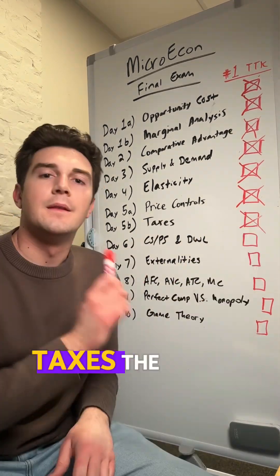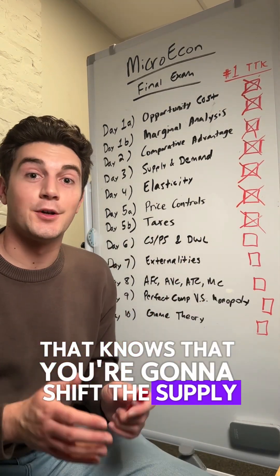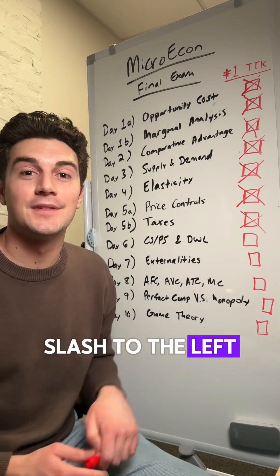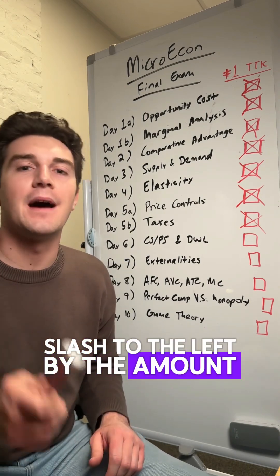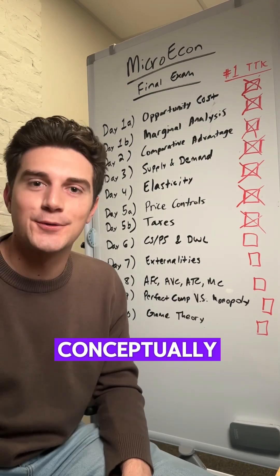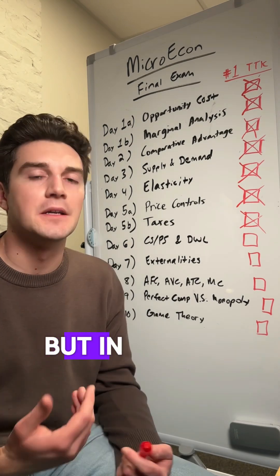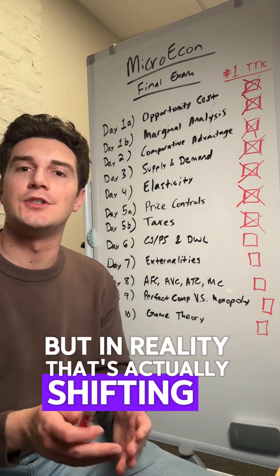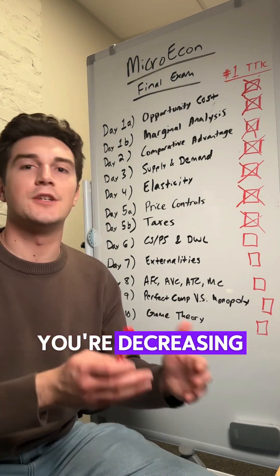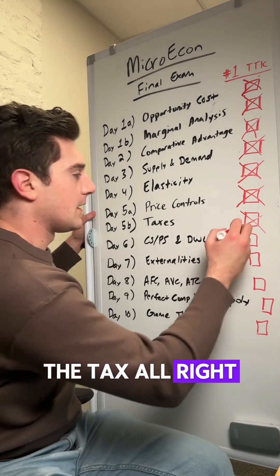Taxes. The biggest thing to note is that you're going to shift the supply curve up, or to the left, by the amount of the tax. I know it's weird conceptually that you're shifting the supply curve up, but in reality that's actually shifting it to the left — you're decreasing supply by the amount of the tax.